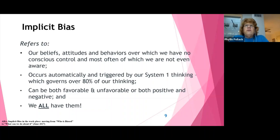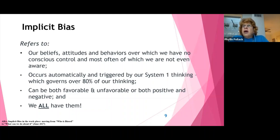Implicit biases refer to our beliefs, our attitudes, our behaviors. They occur automatically, triggered by our system one thinking, which governs 80% of our thinking, and our biases can be both positive, negative, favorable, and unfavorable. We all have them, as much as we may not want to admit it.